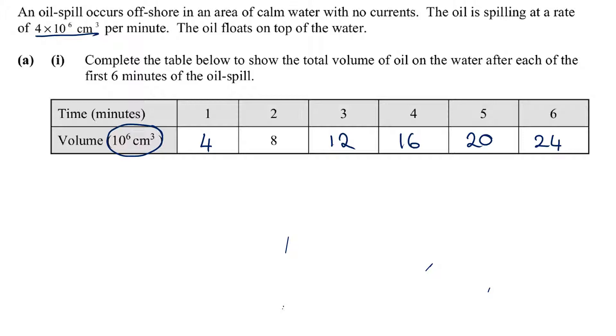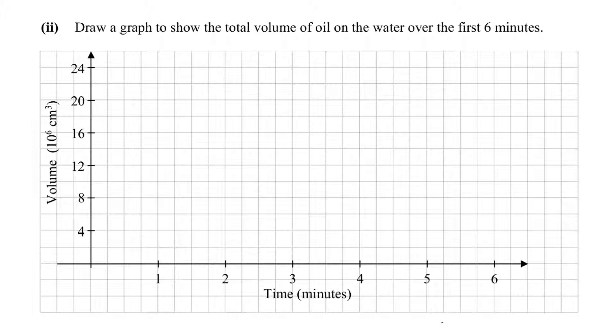It said then draw a graph showing the total volume of oil on the water over the first six minutes. At zero we didn't have that in our table so we're not too bothered. One was 4, two was 8, three was 12, four was 16, five was 20, and six was 24. It matches up absolutely perfectly with the graph. So you're using your ruler to do this and we're drawing what should be a straight line here. That is increasing at a steady rate, so it's going up 4 per minute.